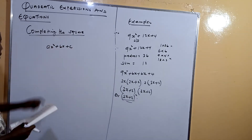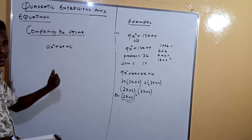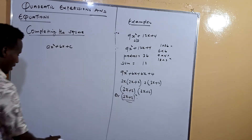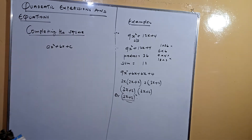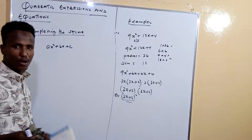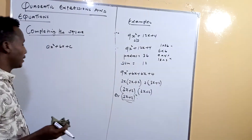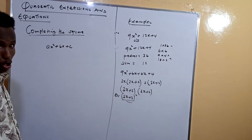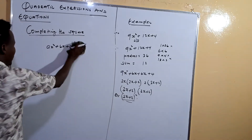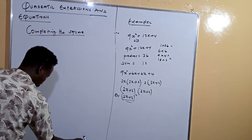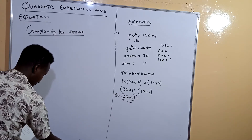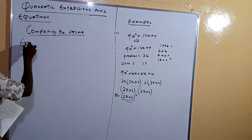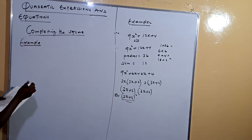In Form 2 we said the quadratic expression is x squared plus bx plus c. When this expression is equated to zero, it becomes a quadratic equation, which we will see later. Now let's look at how questions come from this concept.